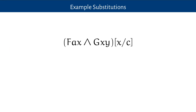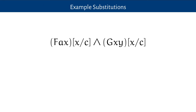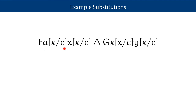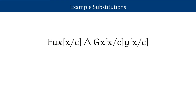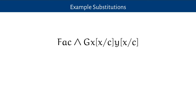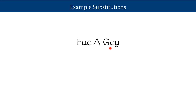Here's how it works in practice. If I want to substitute c for x in 'F(a,x) ∧ G(x,y)', it's a conjunction so I substitute into both conjuncts. In F(a,x): substituting c for x in a gives a (no x there), and substituting c for x in x gives c. In G(x,y): substituting c for x in x gives c, and substituting c for x in y gives y. So the result is F(a,c) ∧ G(c,y). That's the obvious case.